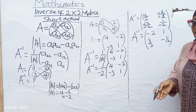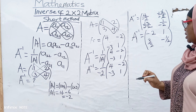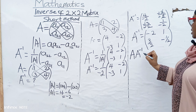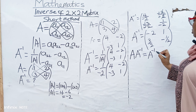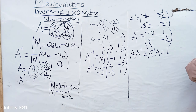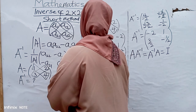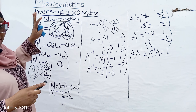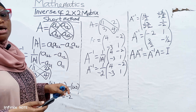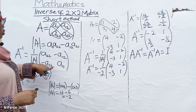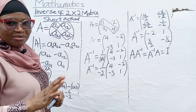If you want to check whether your answer is correct, you have to verify that A multiplied by A inverse is the same as A inverse multiplied by A — and both will give you the identity matrix. If this happens, that means you are correct. That is how to find the inverse of a 2 by 2 matrix — the shortest method. In the next class, I'm going to teach you how we can derive this formula for the inverse of a 2 by 2 matrix. Until then, bye-bye.